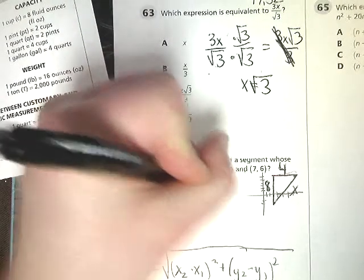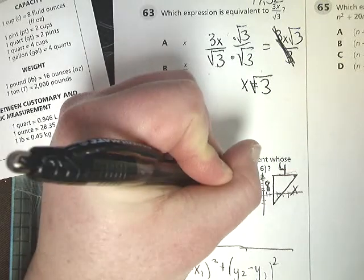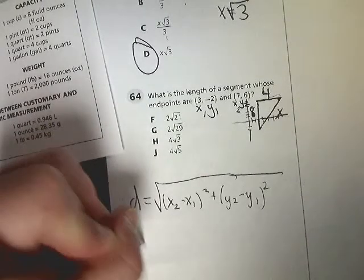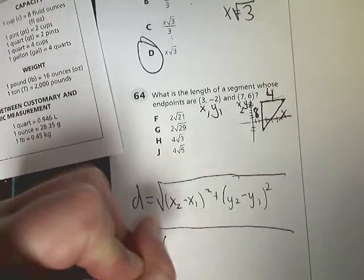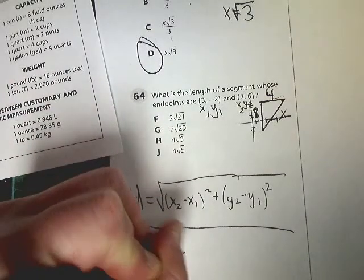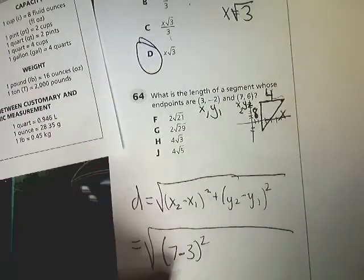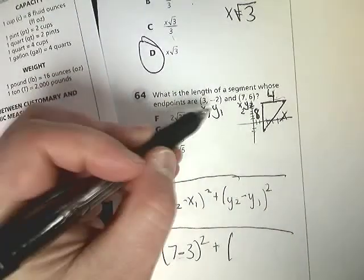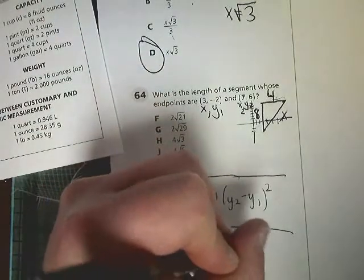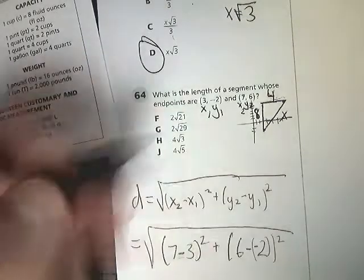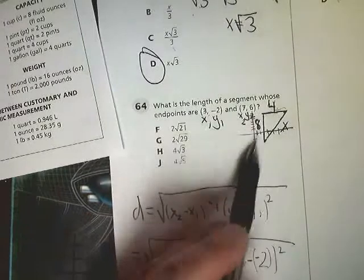x comes before y. This is the second time I wrote them. This is the first time. I always say that because it makes it easier to tell where everything goes. So my x squared term here is 7 minus my x sub 1 is 3. 7 minus 3 is 4, right? y sub 2 is 6 minus negative 2 squared. 6 minus negative 2 is 8.